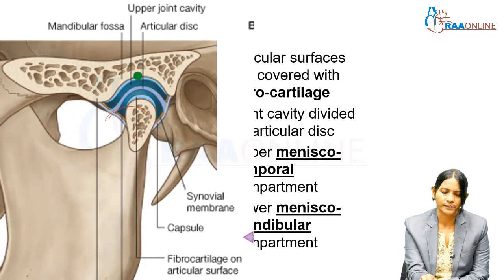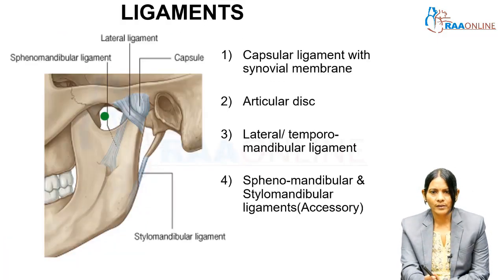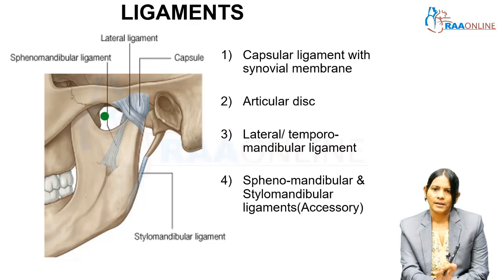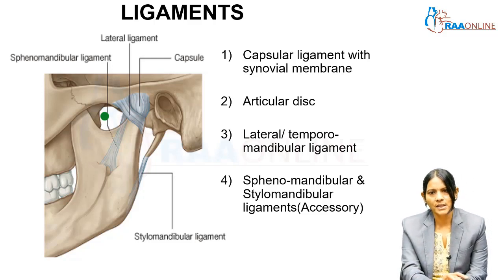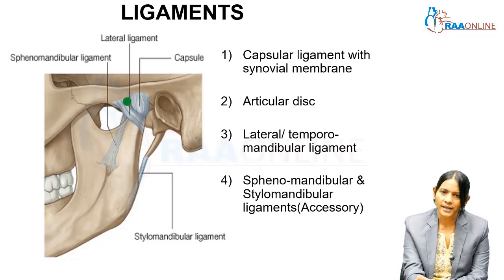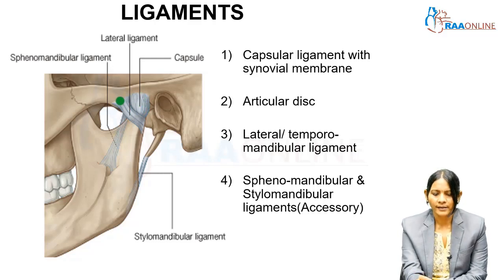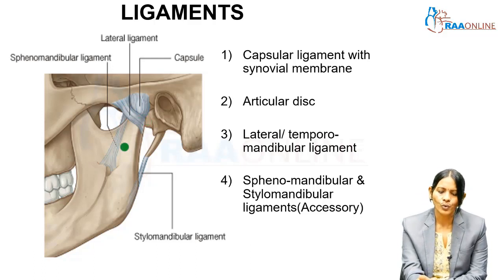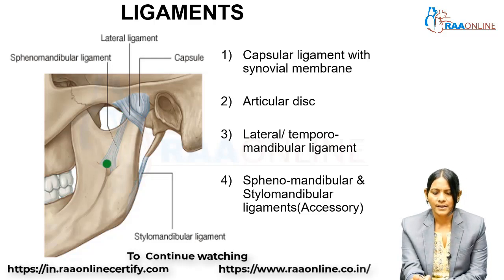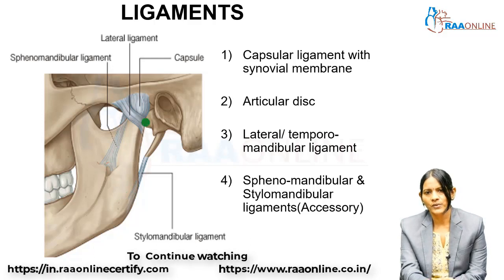For any joint, the topics we deal with are: articular surfaces, ligaments, relations, movements, muscles causing the movements, applied anatomy, and blood and nerve supply. Having covered the articular surfaces, we will now see the ligaments. The temporomandibular joint has four ligaments: the capsule, which encloses the joint, and three named ligaments. The main ligament is the lateral ligament. Apart from that there are two accessory ligaments — the sphenomandibular ligament and the stylomandibular ligament — and of course the articular disc.